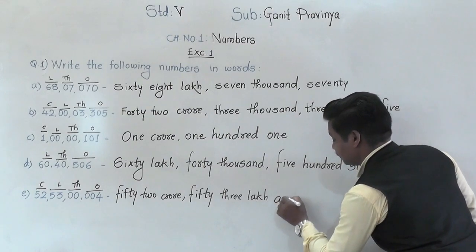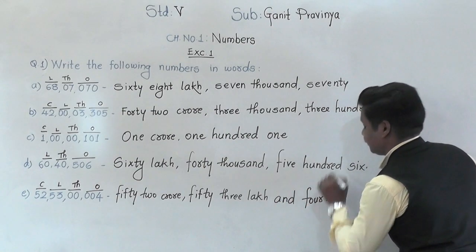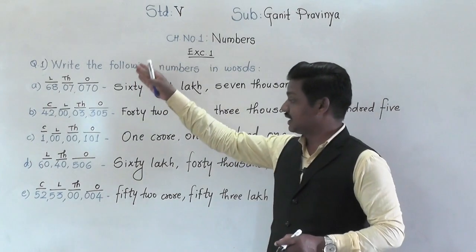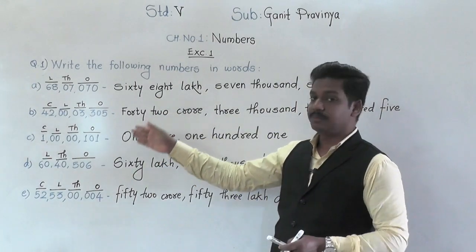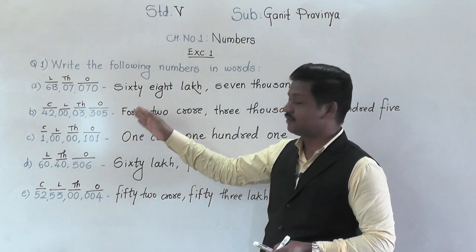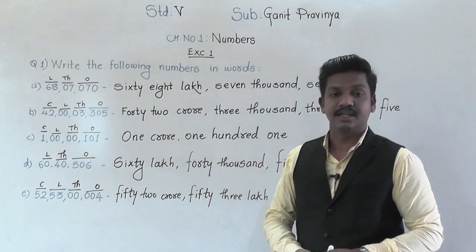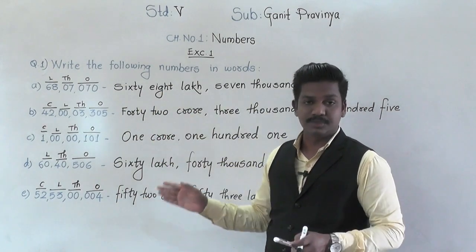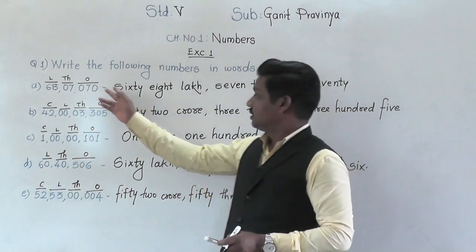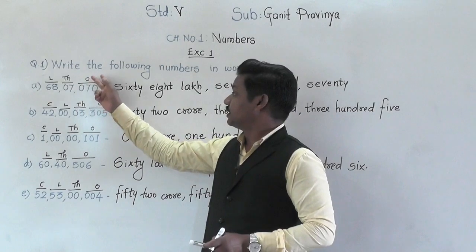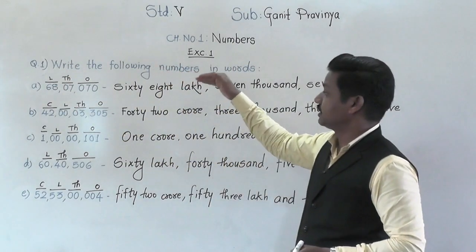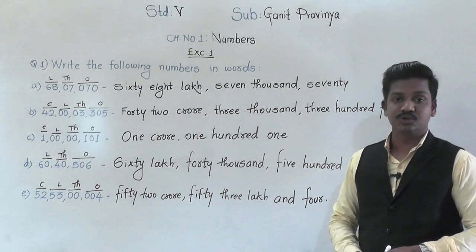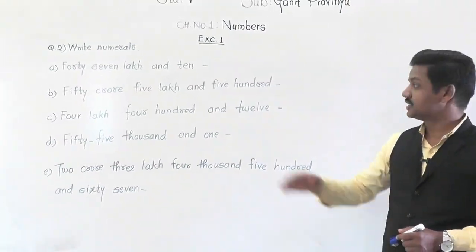These are the number names for these numerals. If you compare these examples with the textbook, the difficulty level here is higher — some challenging examples are given. But if the concept is clear and you go step by step — first put commas according to groups, then write the name of the groups, then write the number name — it's not difficult. Write this in your notebook and let's move to the next question.